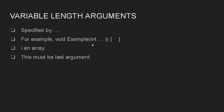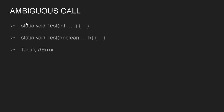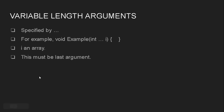One important thing to remember: the variable declared with '...' is always treated as an array. Also, if you are overloading a method that has a variable length argument, that variable length argument must always be the last parameter. If you place it somewhere other than the last position, the compiler will give an error.